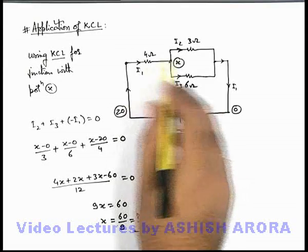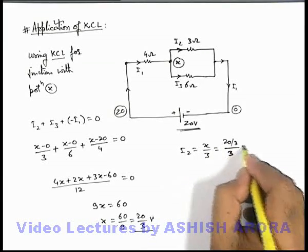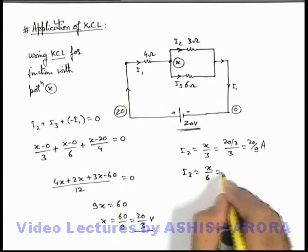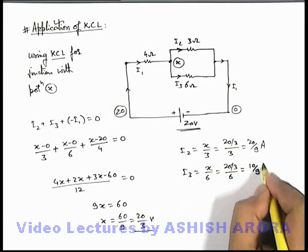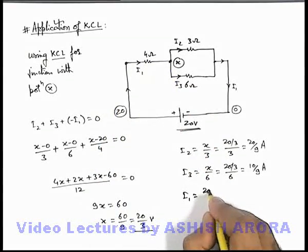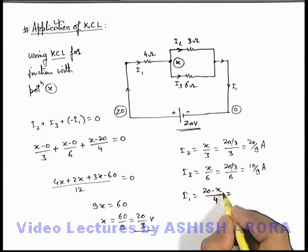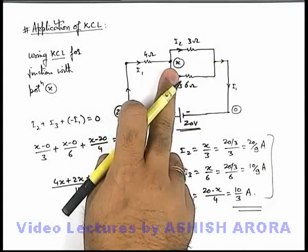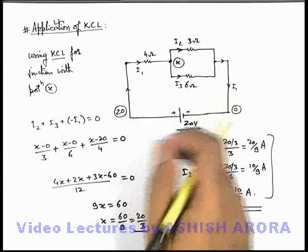Now knowing x = 20/3 V, we can calculate all currents. Current i2 = x/3 = (20/3)/3 = 20/9 ampere. Current i3 through the 6 ohm resistance = x/6 = (20/3)/6 = 20/18 = 10/9 ampere. Current i1 flows from 20 V to x, so i1 = (20 − x)/4 = (20 − 20/3)/4 = (40/3)/4 = 10/3 ampere. We can also find the potential difference across any two terminals of the circuit.